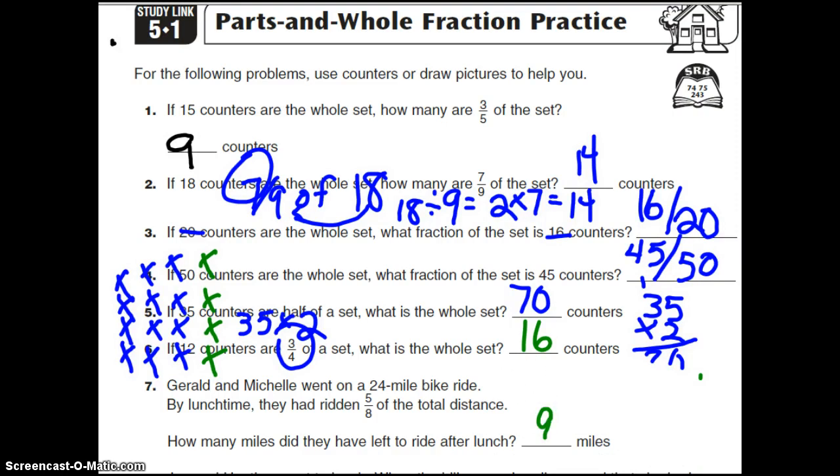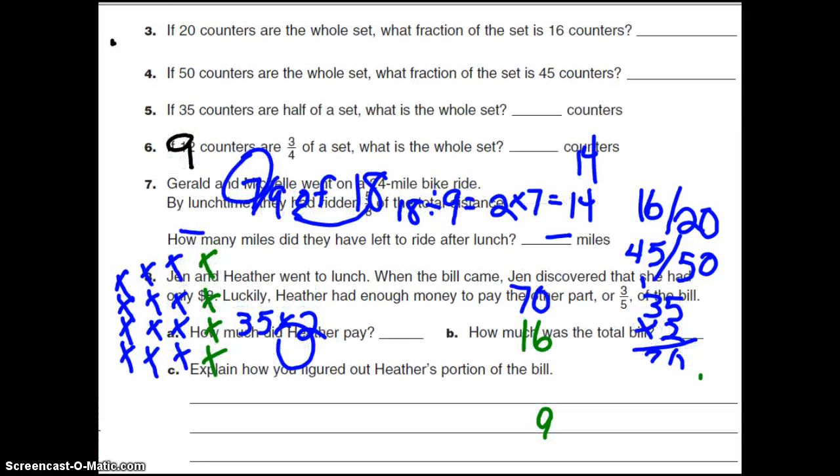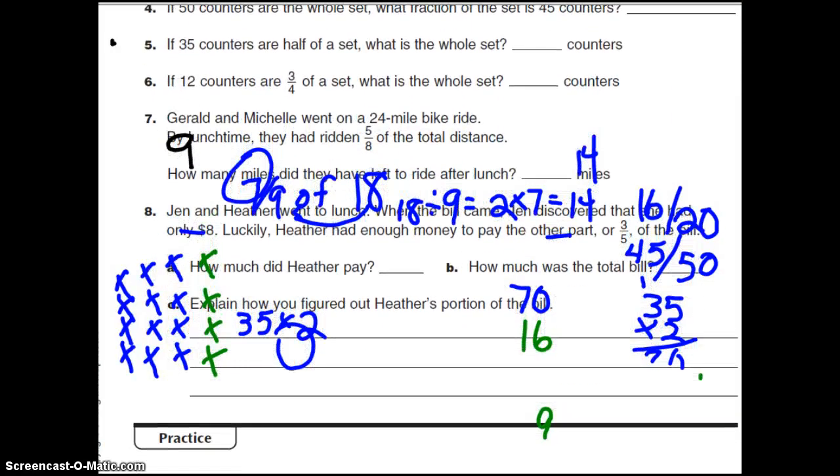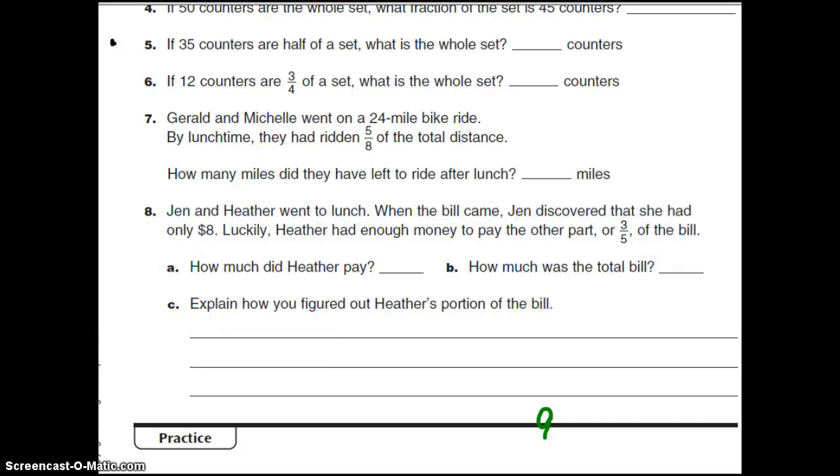Alright, and number 8. Jen and Heather went to lunch. When the bill came, Jen discovered that she only had $8. Luckily, Heather had enough money to pay for the other part, or 3/5 of the bill. So we have to figure out, first off, how much Heather did pay, and then how much was the total bill.